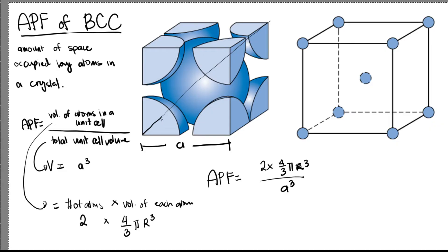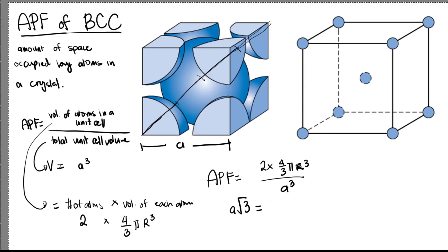We can see that in this diagonal, it is 1, 2, 3, 4 atomic radii long. The body diagonal of a cube, we know from mathematics, is equal to A times the square root of 3. So we get the relationship: A times square root of 3 equals 4R, and expressing R in terms of A, we get R equals A times square root of 3 over 4.